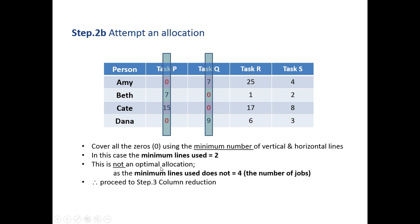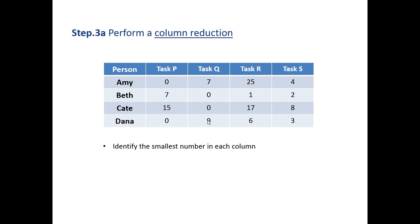So this is not an optimal allocation. An optimal allocation is whereby it takes four lines to cover up the four zeros. Here I can cover it with two vertical lines, so we haven't achieved an optimal allocation. So we've done our row reduction, attempted allocation, been unsuccessful. The next step is to perform a column reduction with the numbers that remain.